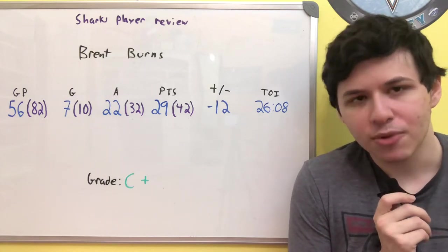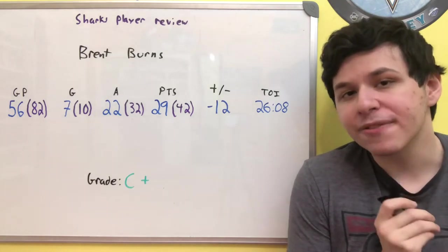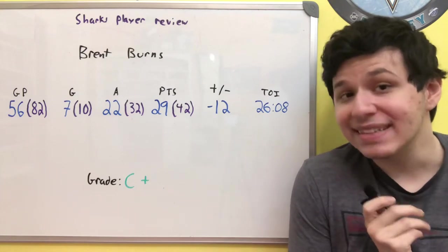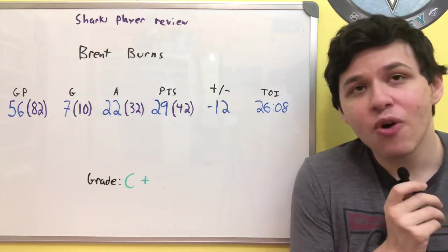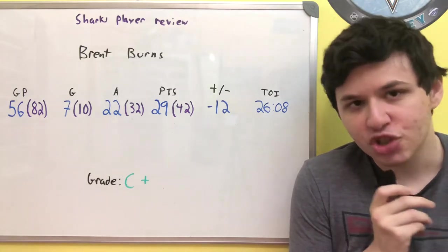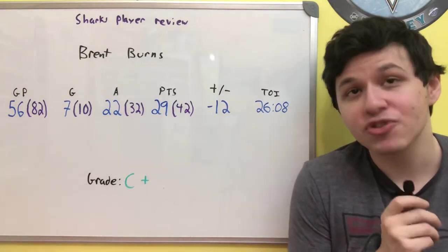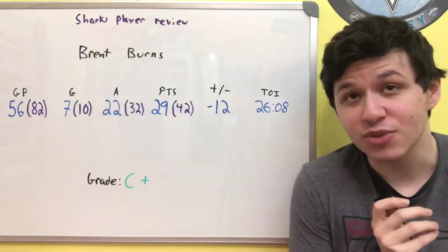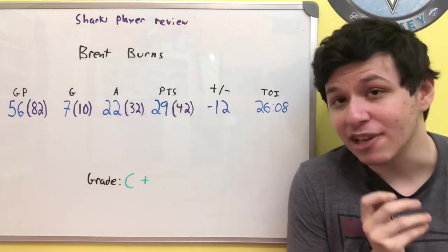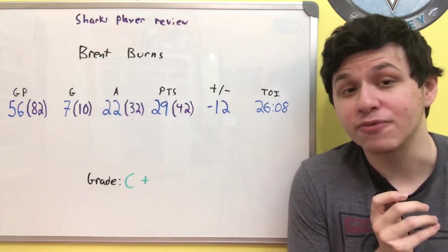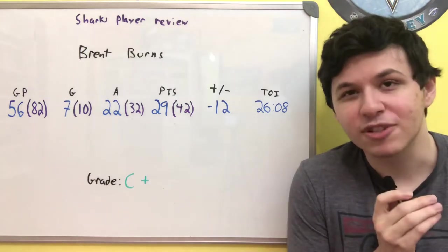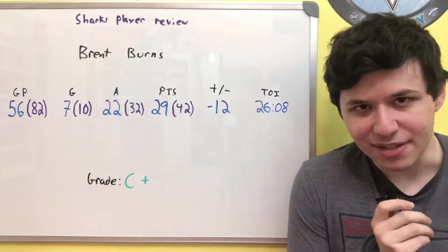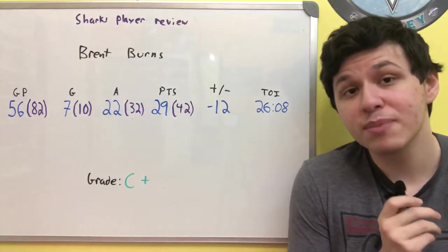When you are the number one defenseman in essentially every situation for your team on a pretty bad team like the San Jose Sharks were this season, it is no surprise that your plus-minus is going to trend more towards the negative side. And the fact that Brent Burns, when we account for things like that empty net, we could also account for the short-handed goals against, which could sometimes be Brent Burns' fault but not necessarily always. If you account for those, which he's been on for two against, you can get to a similar to Mario Ferraro minus-6. So just in general, not an awful plus-minus here for Brent Burns if that's a stat that you like to look at.